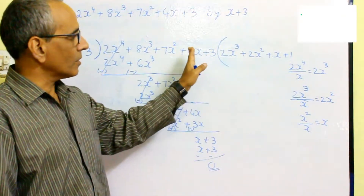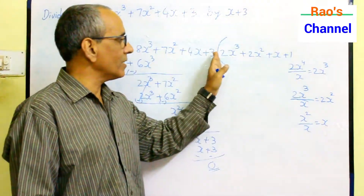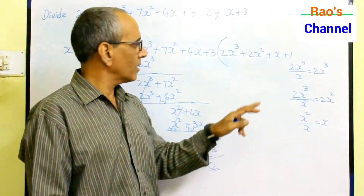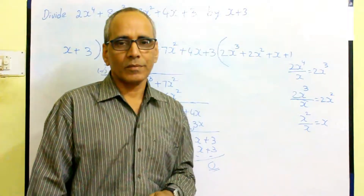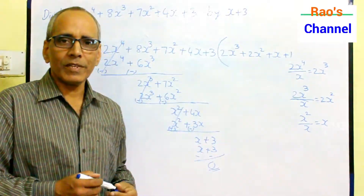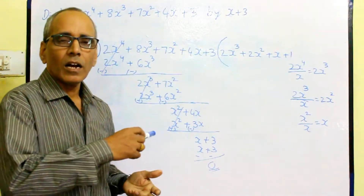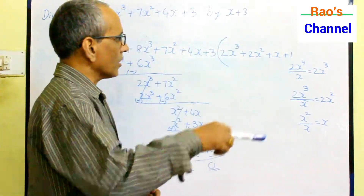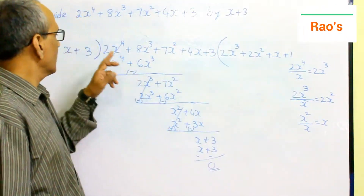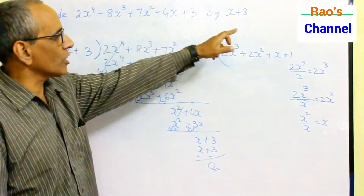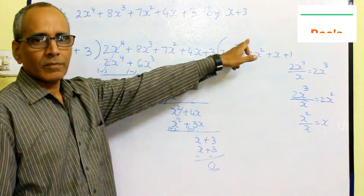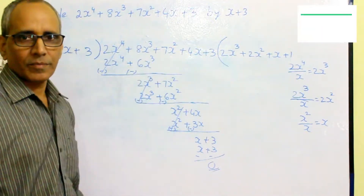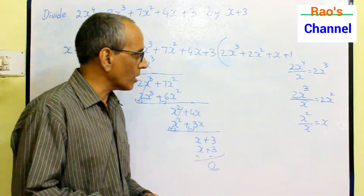So we can say x+3 is a perfect factor of this polynomial. You can also observe that the quotient is in descending form according to the power of the variable — power 3, power 2, power 1. By observing this, we can confirm our work is perfect. To verify, use the algorithm: divisor into quotient plus remainder gives the dividend. Let's solve one more division.